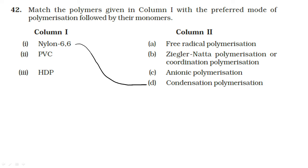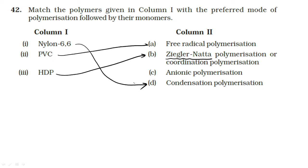Nylon 6,6 is an example of condensation polymerization — no doubt. High density polyethylene (HDPE) is prepared using the Ziegler-Natta catalyst. PVC (polyvinyl chloride) is prepared by a free-radical mechanism.